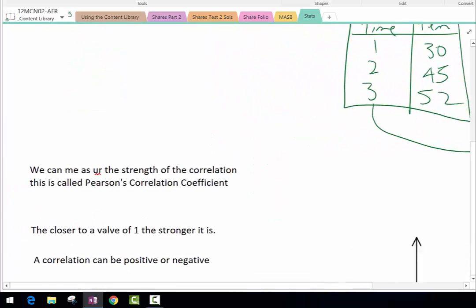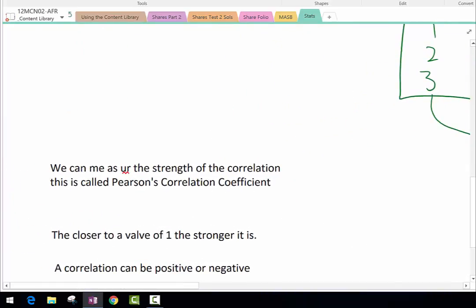We can measure the strength of the correlation. That should be measure. We can measure the strength of the correlation by plugging all the numbers into a calculator and calculating it. This is called Pearson's correlation coefficient. That coefficient is just a number that goes between zero and one.